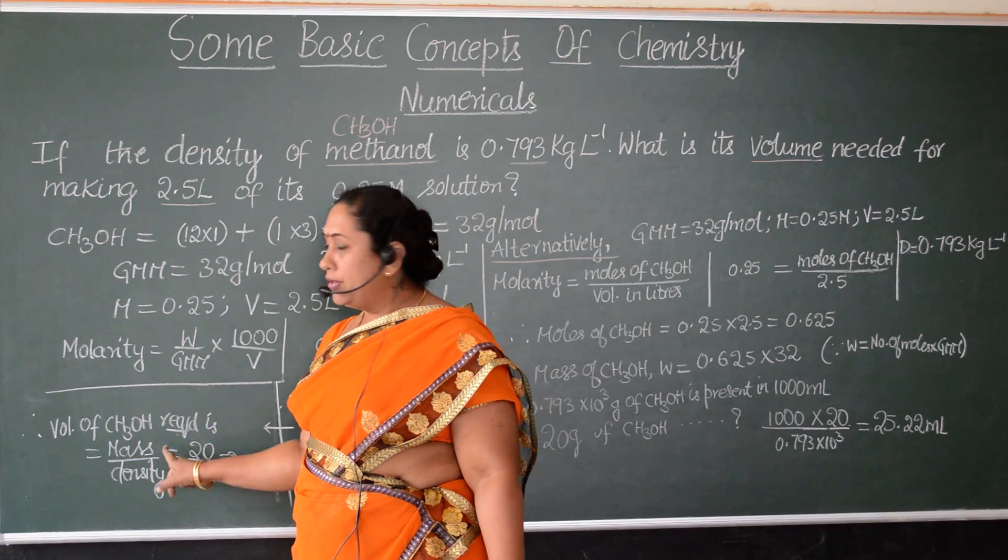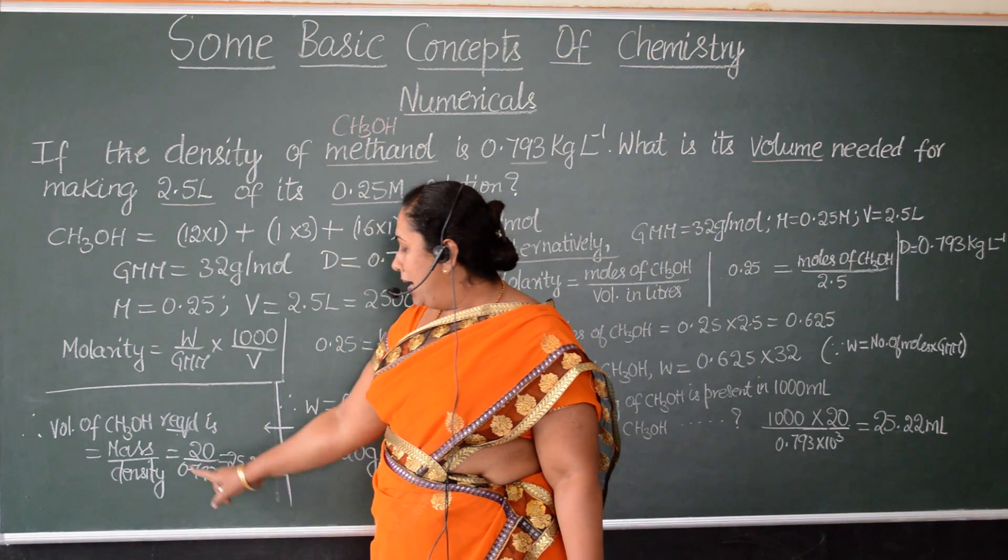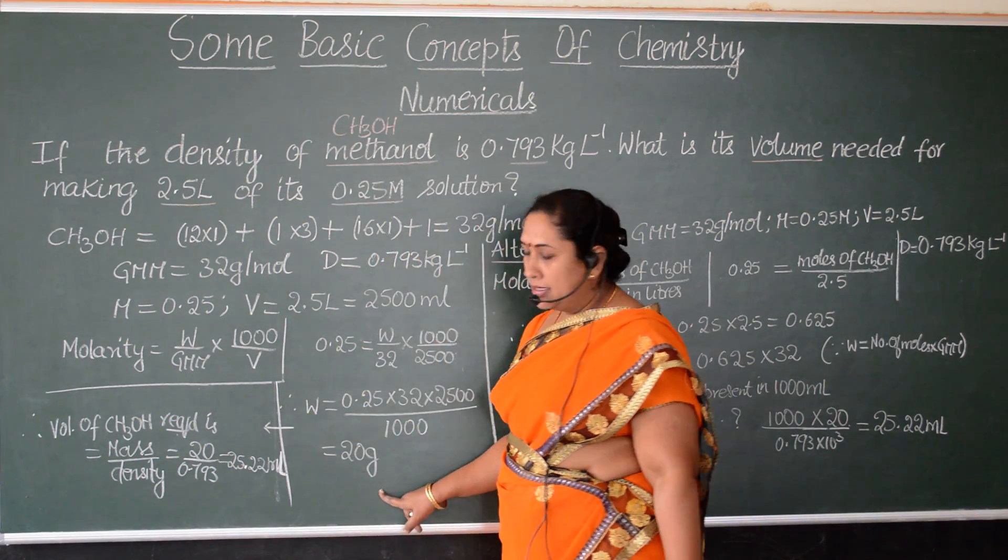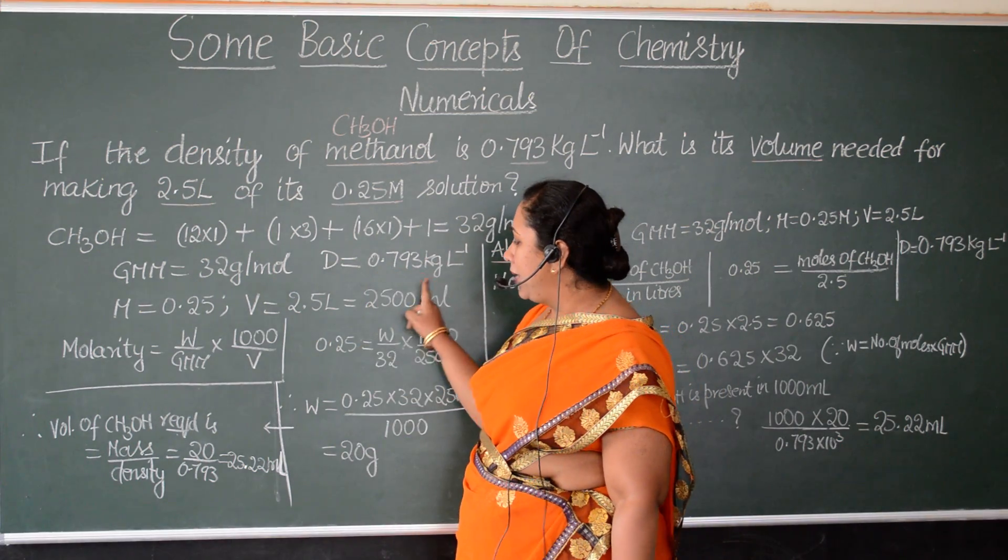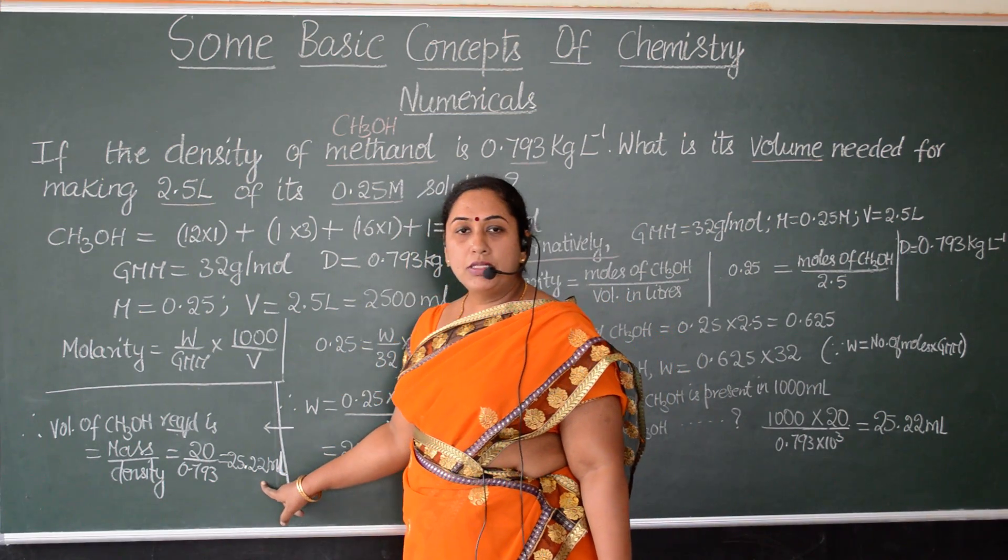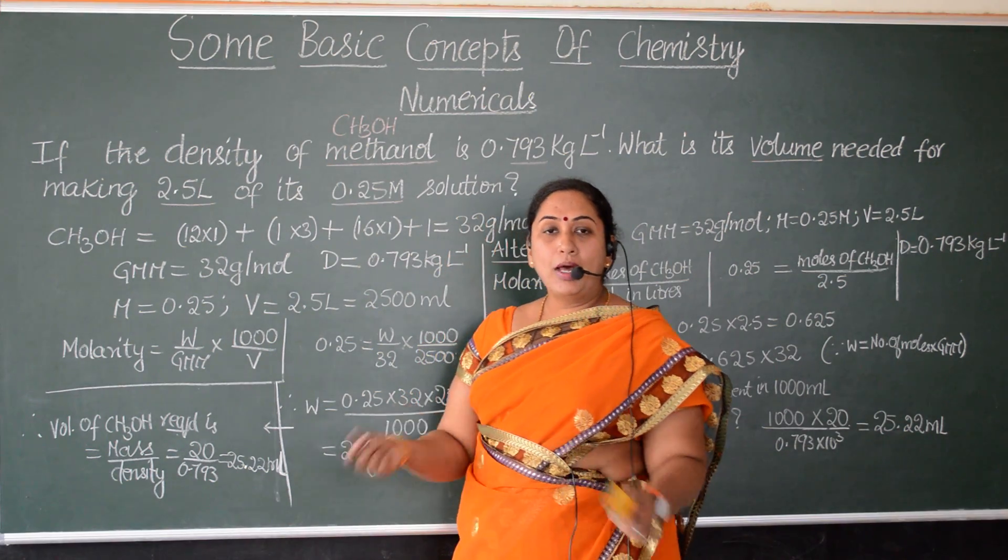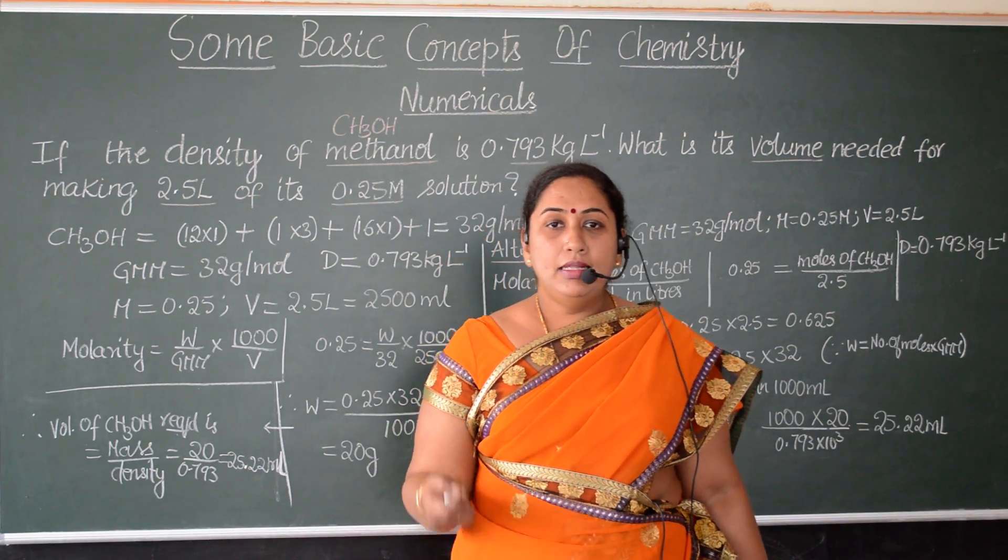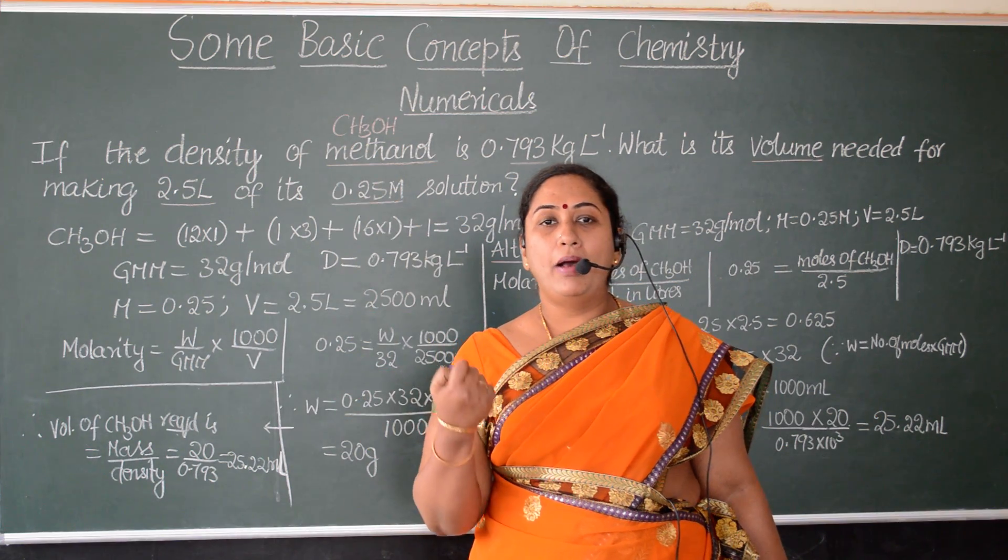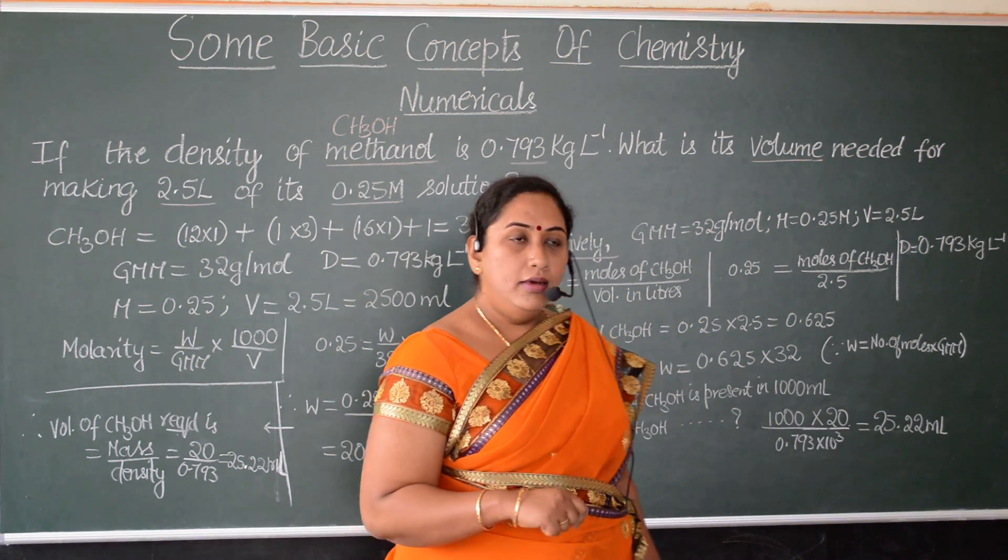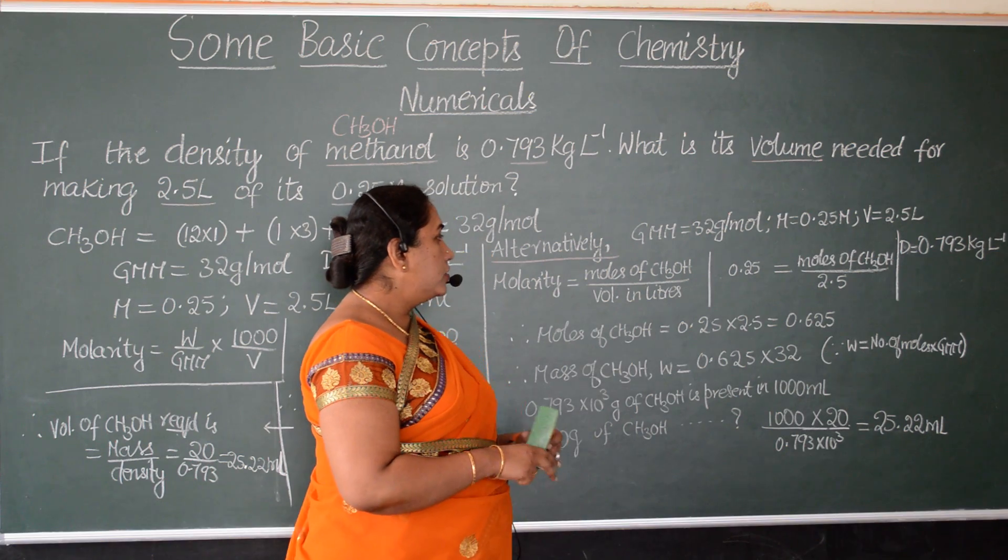So, what will be the volume of methanol required for us? Mass, we found it as 20 grams divided by density 0.793. This gives the value as 25.22 ml. This is one method of solving. The same numerical can be solved by one more method. Let us look into the other method of solving.